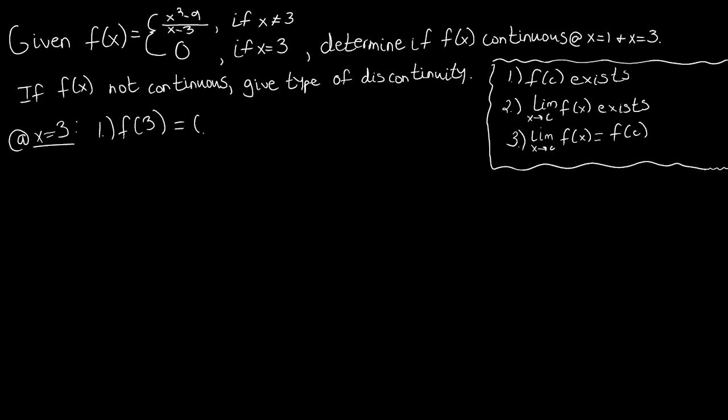So f of 3 equals 0. f of 3 exists, so step one is satisfied. That's a return to good value right there. For part two, we're concerned with the limit of f of x as x approaches 3.